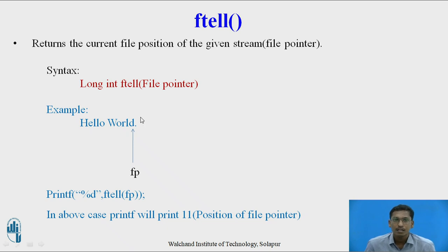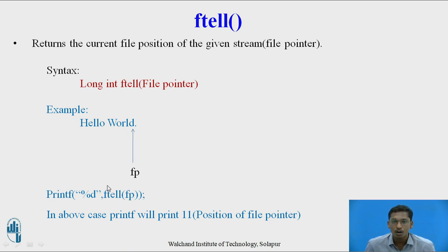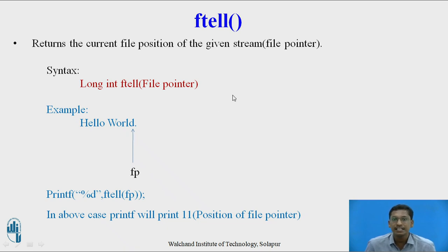The next function is ftell. It returns the current file pointer position as a long integer value. The syntax is ftell(file pointer). For example, if 'hello world' is a string in a file and the file pointer is currently pointing to 'd', then ftell(fp) will return 11, which is the current position of the file pointer.